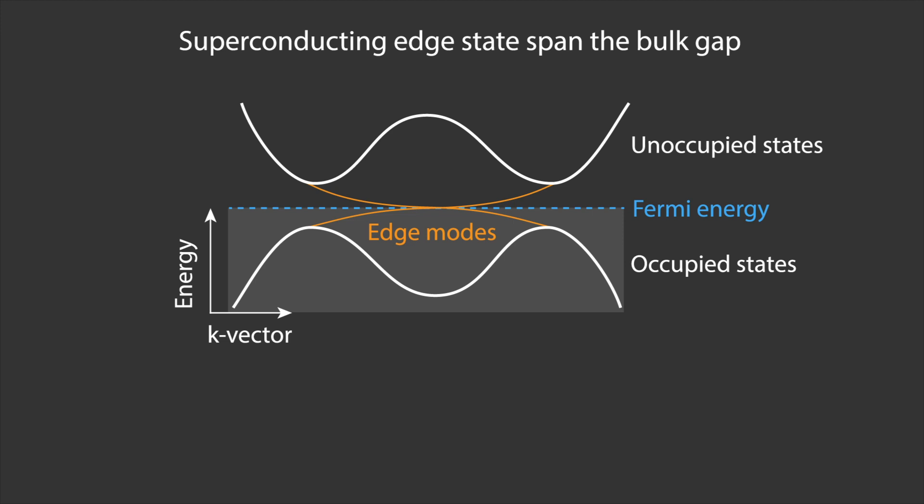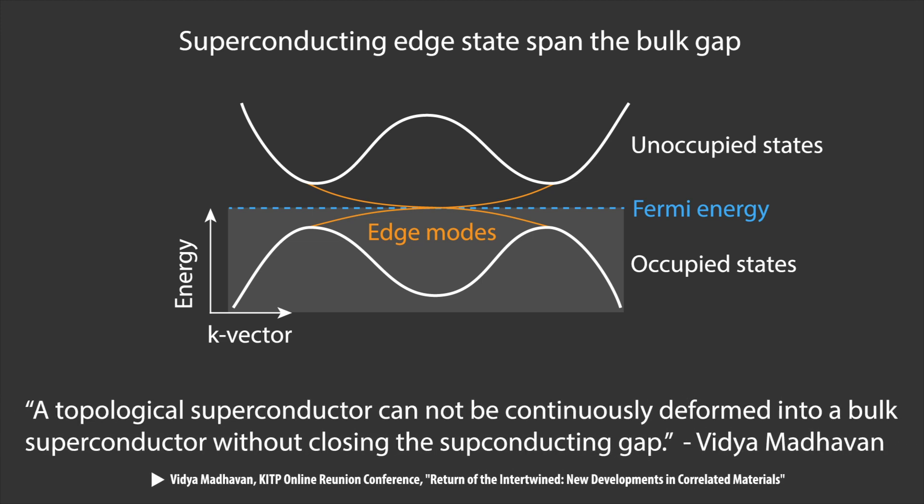This is a completely different phase of matter to superconductivity. That is, the phase space between the two states is not overlapping, distinctly separated. A topological superconductor cannot be continuously deformed into a bulk superconductor without closing a superconducting gap.